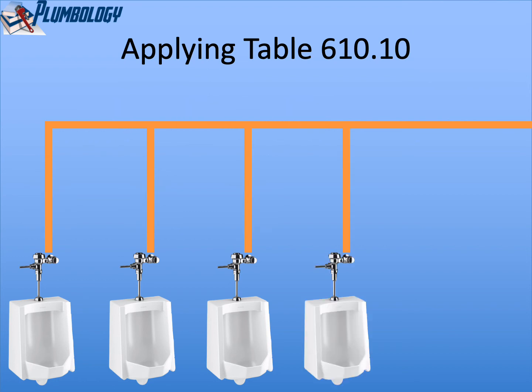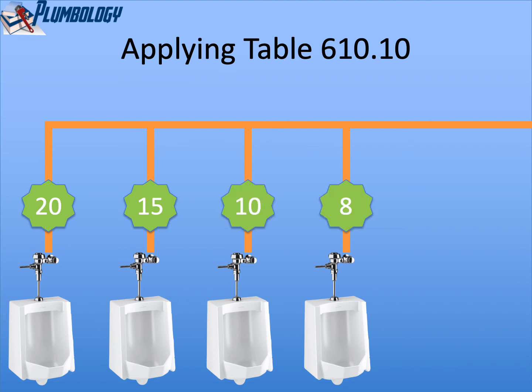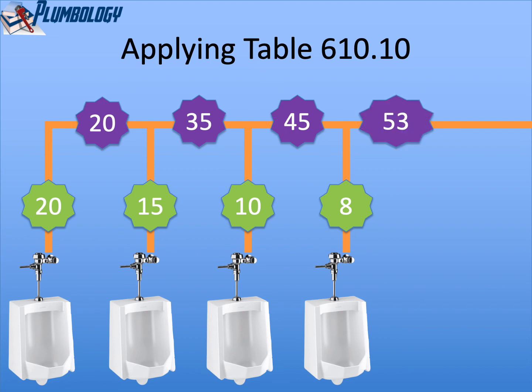If we have four urinal flush valves, we still start at 20, the next one is 15, then 10, and the fourth one will be 8. Going back to the pipe segments: 20, 35, 45, and 53. That water pipe branch would be sized for 53 water supply fixture units.